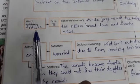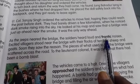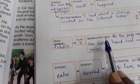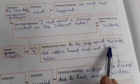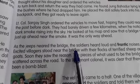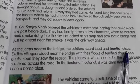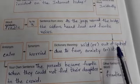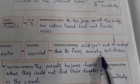Now where is the word 'frantic' in the reader? Frantic — F-R-A-N-T-I-C. This is on the third page of the lesson, so I wrote page number 3. Now the sentence from the story: 'As the jeeps neared the bridge, the soldiers heard loud and frantic noises.' You can see the same sentence here in the reader: 'As the jeeps neared the bridge, the soldiers heard loud and frantic noises.' The dictionary meaning is: 'wild or out of control due to fear, anxiety, or stress.'